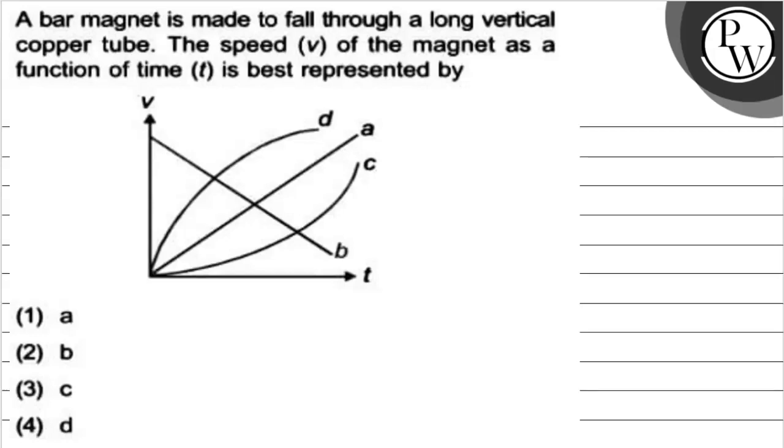Hello Bachchom. Let's see this question. The question says, a bar magnet is made to fall through a long vertical copper tube. The speed v of the magnet as a function of time t is best represented by A, B, C, and D.